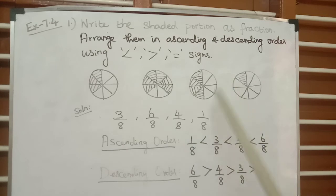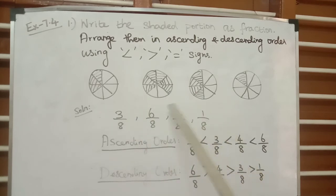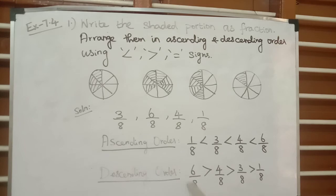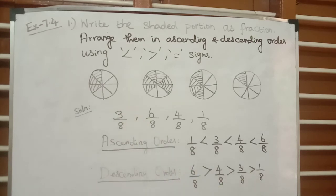For descending order, since the denominators are the same, we compare the numerators. Among 3, 6, 4, and 1, the largest value is 6, so 6 by 8 comes first. The next largest is 4, then 3, then 1. So the descending order is: 6 by 8 greater than 4 by 8 greater than 3 by 8 greater than 1 by 8.